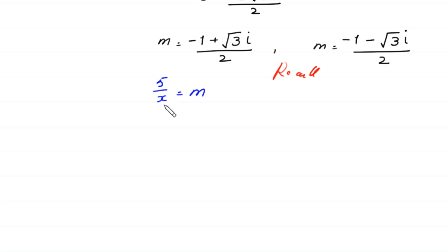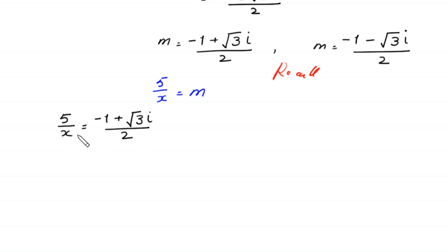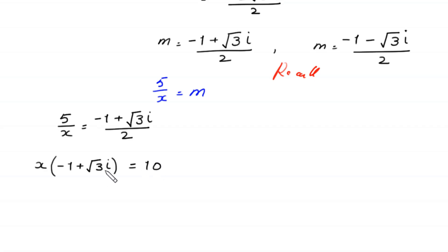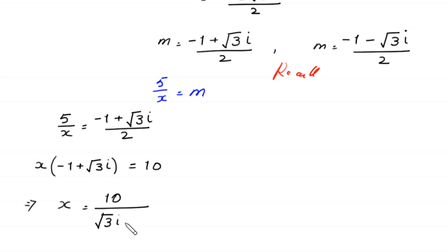To find the second value of x, we put m equals negative 1 plus square root of 3i, over 2, into 5/x equals m. The equation becomes 5/x equals (negative 1 plus √3i)/2. Using cross multiplication: x times (negative 1 plus √3i) equals 5 times 2, which is 10. Dividing both sides by (negative 1 plus √3i) gives x equals 10 divided by (√3i minus 1).